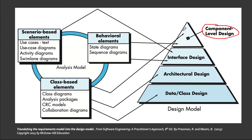Component-level design describes the internal details of each software component. Going back to the house building metaphor, this design is analogous to the drawings and specifications for each room in the house, including possible wiring, location of electrical outlets, switches, faucets, beds, cabinets, and so on. In software design, this translates to the data structures for all data objects, the algorithm for all processing that occurs within the component, and the interface that allows access to all component operations. The activity diagram, sequence diagram, state diagrams, and data flow diagram can be used to represent this type of logic.